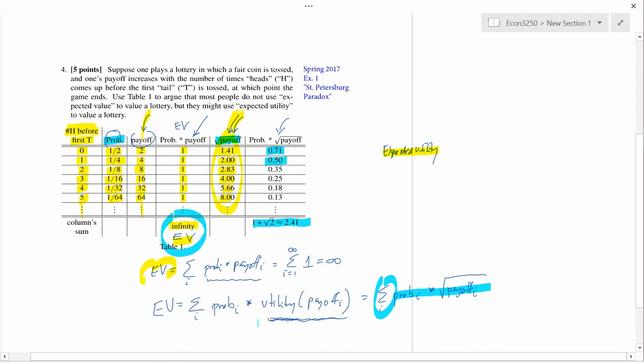Whereas when you added up the probabilities times the payoffs, you got an expected value of infinity. So in this case, the expected value of this game is infinity, and the expected utility of this game is $2.41. This sounds a lot more plausible. We said it just didn't make any sense that people would be willing to give up all the money they had for a chance of playing this game one time. But it does make a lot of sense that people would be willing to pay $2.41 for the chance to play this game.